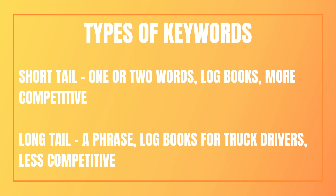Short tail keywords are basically one or two words, such as 'log books'. These are more competitive as they are quite broad. Long tail keywords are a phrase, such as 'log books for truck drivers', and these are less competitive as they are more specific and niched down.